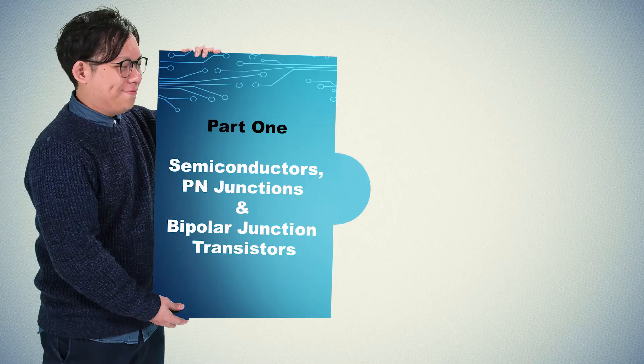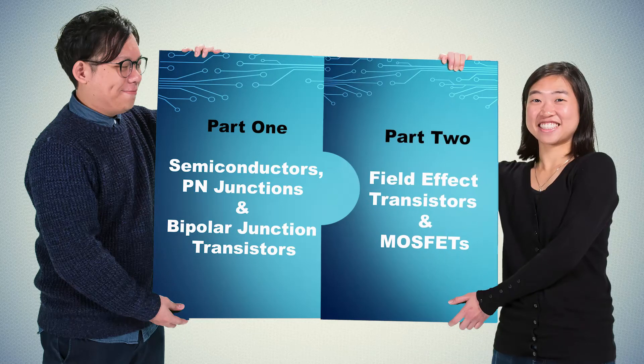Even though a lot of tedious mathematics are avoided, we don't compromise the depth of understanding. We help you visualize the concepts more easily. The whole course will be divided into two parts: the first part on PN junctions and bipolar junction transistors, and the second part on field effect transistors and MOSFETs.